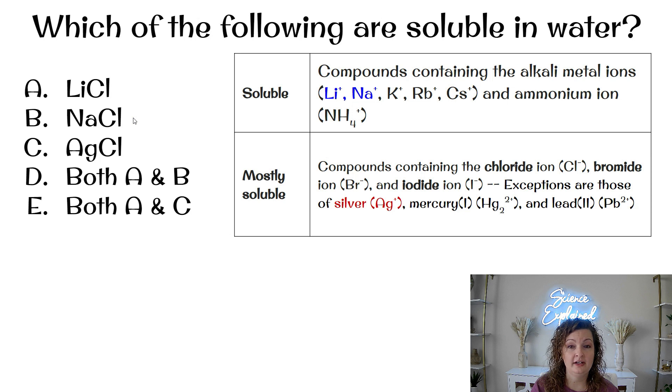NaCl, that's a chloride ion, and Na is also alkali. So that one is also soluble. This one is silver chloride. So chloride is yes, but we have an exception. And the exception is if it contains silver. So this one does. So this one will be insoluble. So our answer choice would be A and B. So answer choice D would be the correct one for this matter.